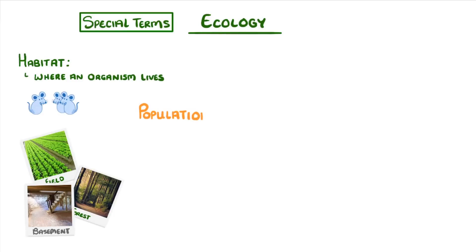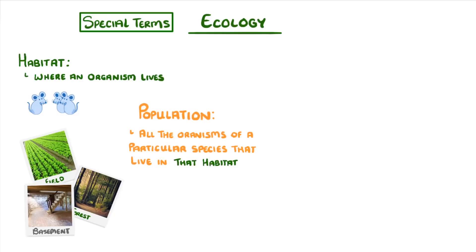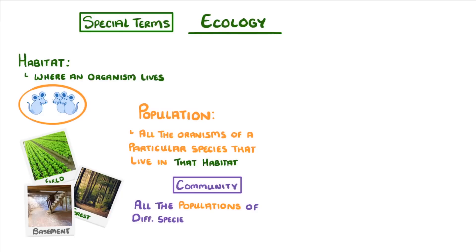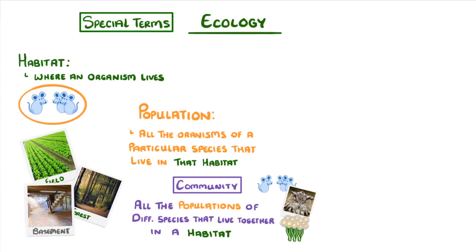Meanwhile, a population is all of the organisms of a particular species that live in that habitat — so all the mice that live in the field. Next we have the community, which is all the populations of different species that live together in a habitat. So the community would involve not only the mice, but also the owls, the plants, and any other organisms that live in that field.